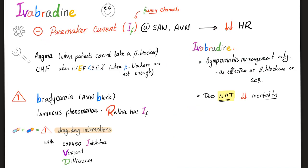Ivabradine — what's the mechanism of action? It inhibits the pacemaker current, also known as the funny current or the funny channels. These are responsible for the automaticity of your SA node and AV node. That's why your heart can pump on its own, independent of sympathetic or parasympathetic innervation. The impulse initiates from within — hashtag automaticity.